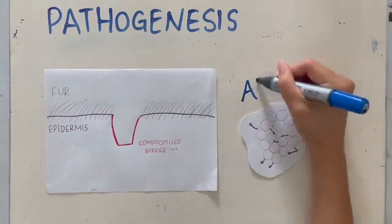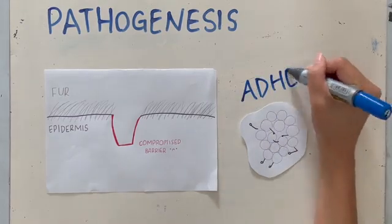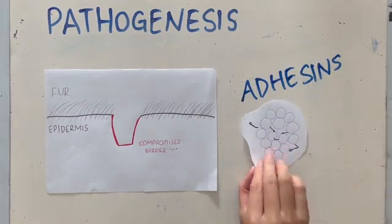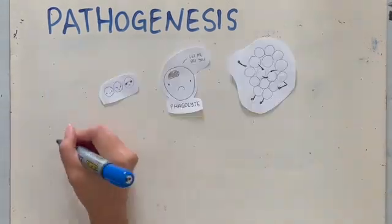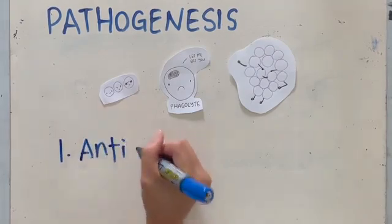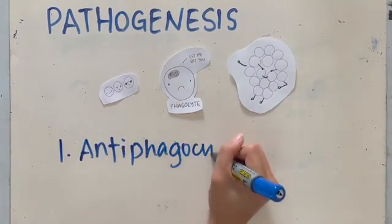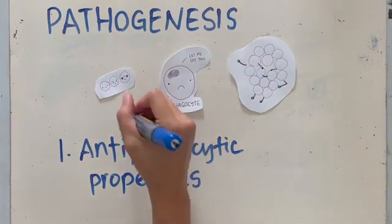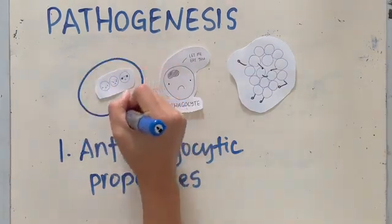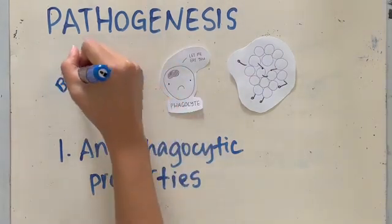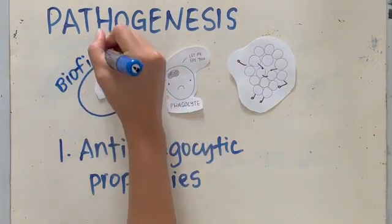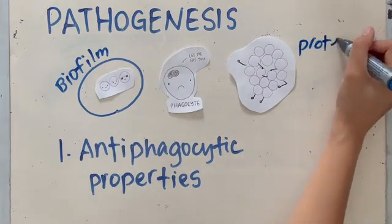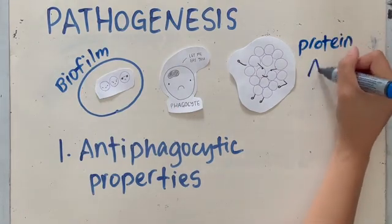Staph adhesins recognize and bind to host extracellular matrix. Staph can then create disease due to three factors. Staph can avoid phagocytosis because it can produce a gelatinous biofilm and it has a surface protein that prevents opsonization by inhibiting complement activation.